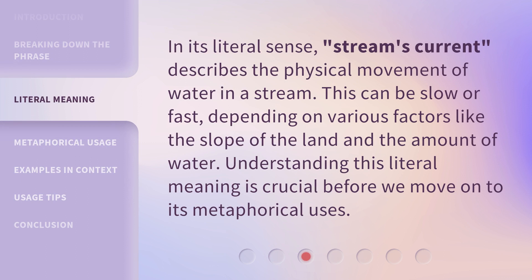In its literal sense, Streams Current describes the physical movement of water in a stream. This can be slow or fast, depending on various factors like the slope of the land and the amount of water. Understanding this literal meaning is crucial before we move on to its metaphorical uses.